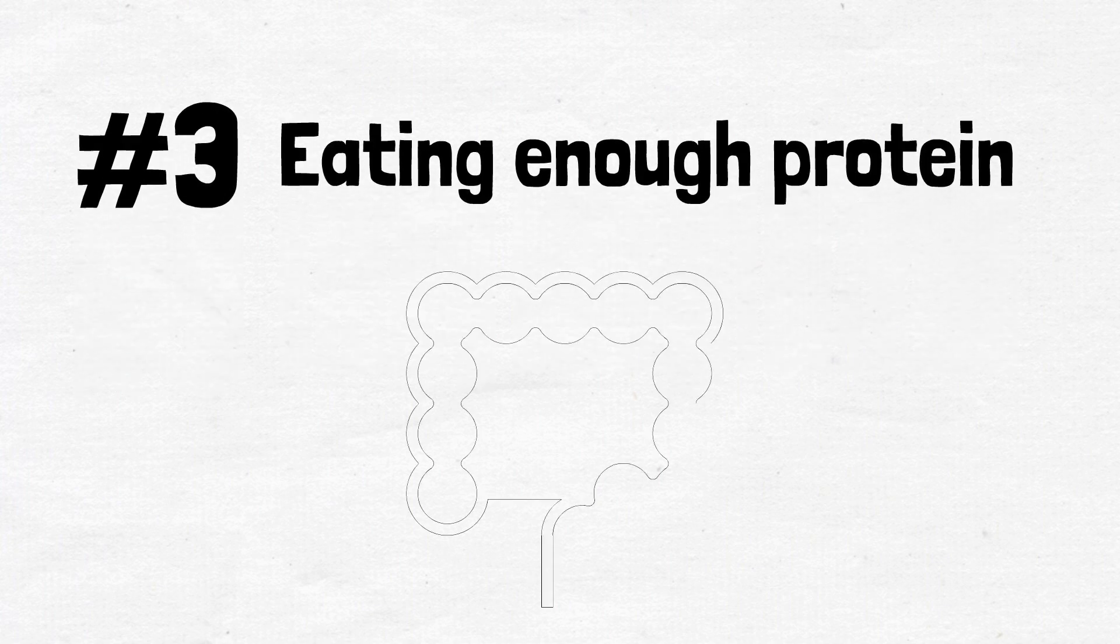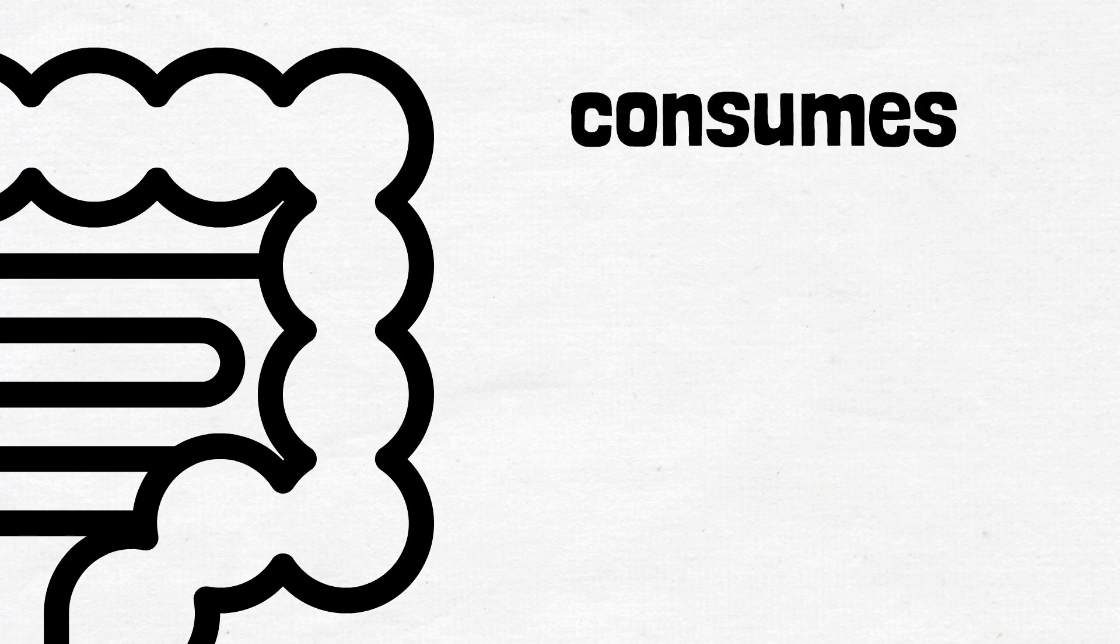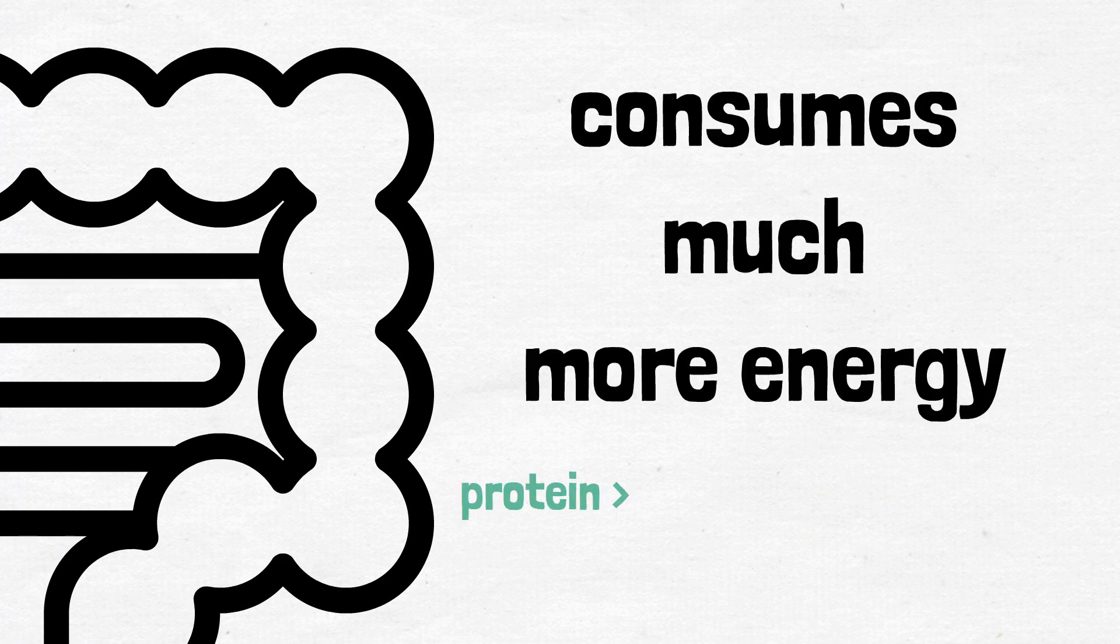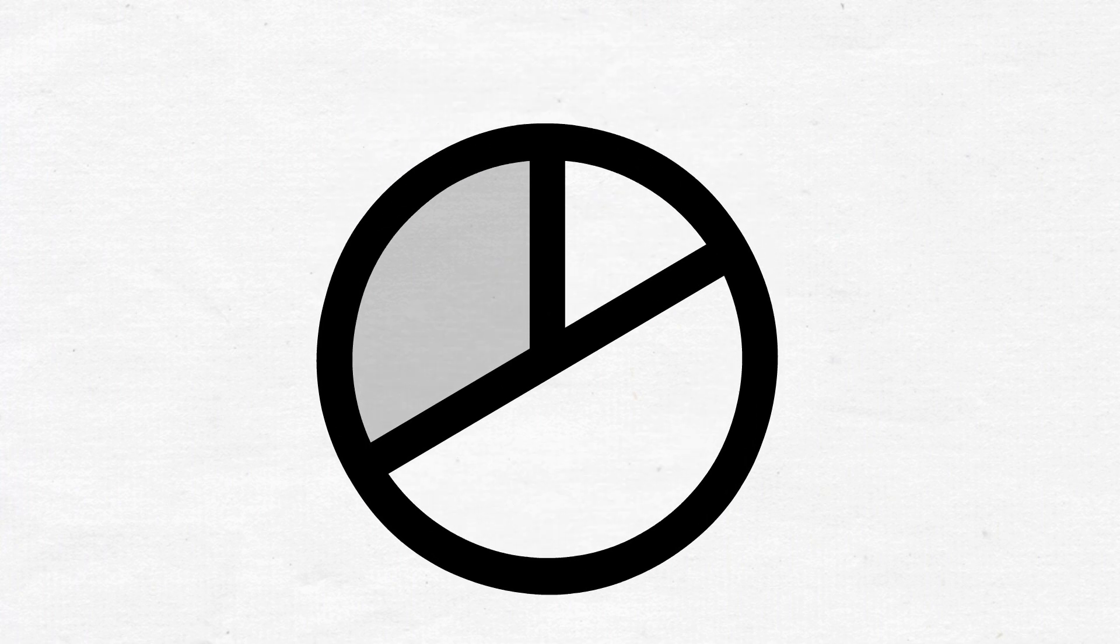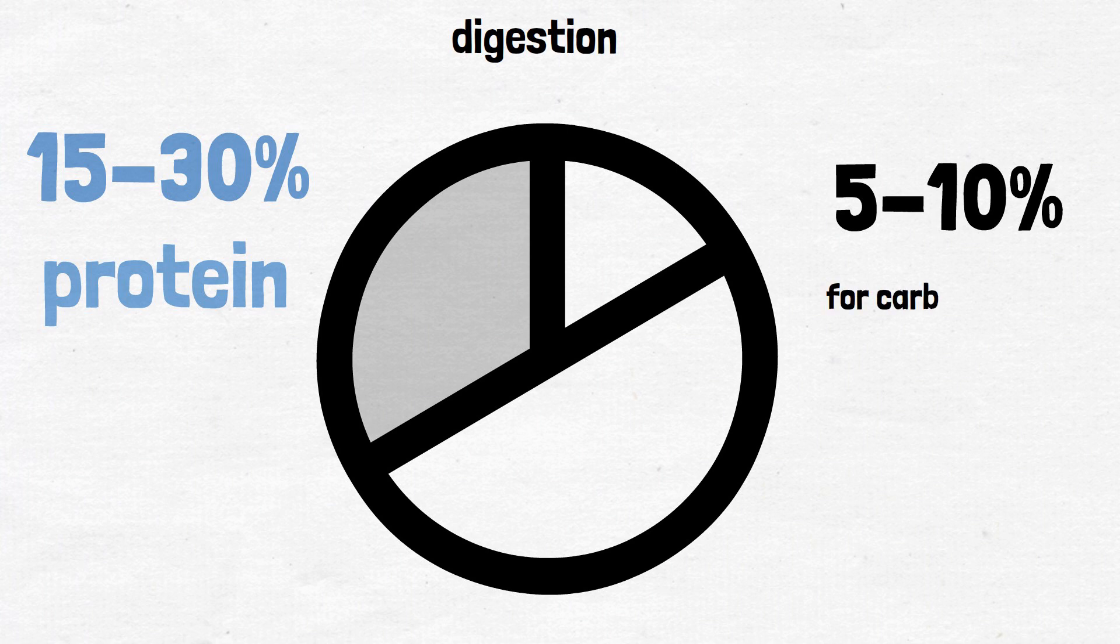To digest and store protein, our body consumes much more energy than fat and carbohydrates. About 15 to 30 percent of calories we get from eating protein are used for digestion, while this number is 5 to 10 percent for carbohydrates and only 0 to 3 percent for fats.